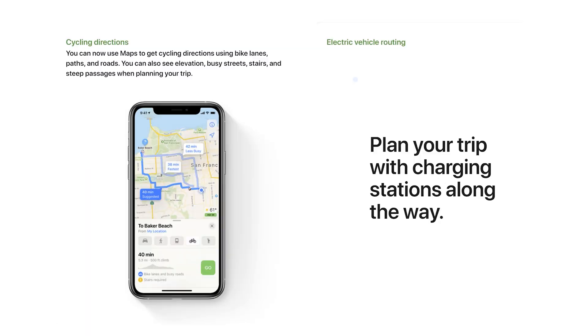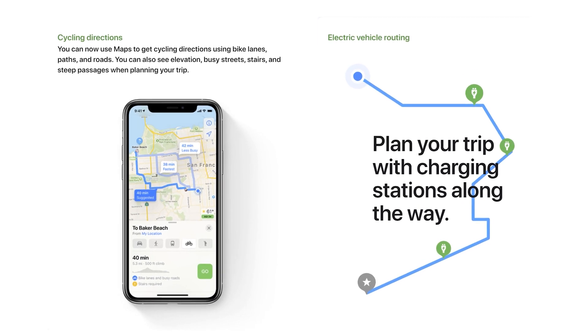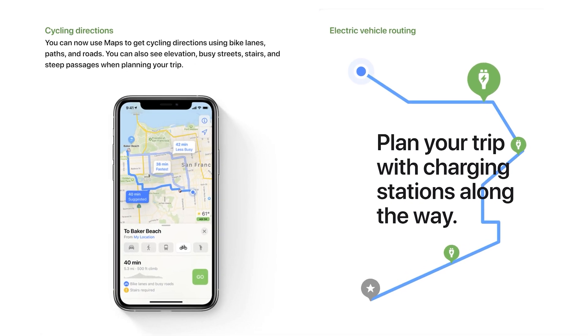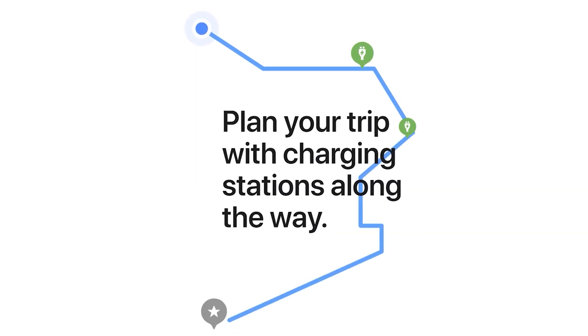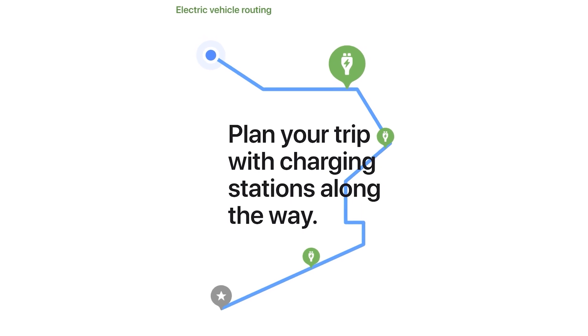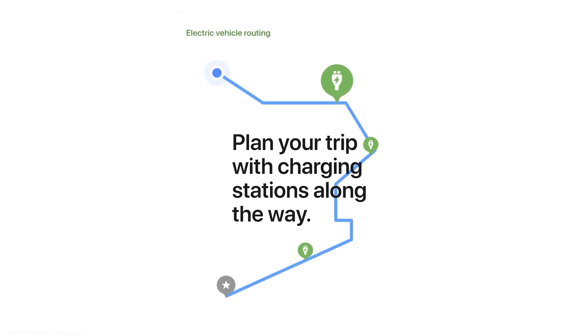The seventh major upgrade is in Maps. Maps are extremely important and very useful in our day-to-day life, so we got a major upgrade. We can now use Maps to get cycling directions using bike lanes, paths, and roads. Not just this — we can also plan our trip considering electric charging stations for electric vehicles, which is very helpful from a future point of view.